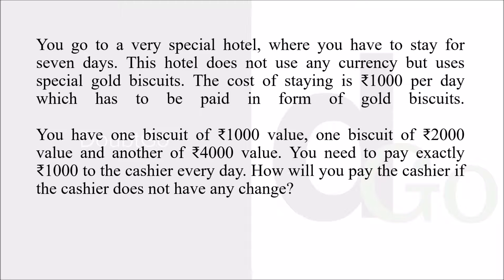You have one biscuit of rupees one thousand value, one biscuit of rupees two thousand value, and another of rupees four thousand value. You need to pay exactly rupees one thousand to the cashier every day. How will you pay the cashier if the cashier does not have any change?